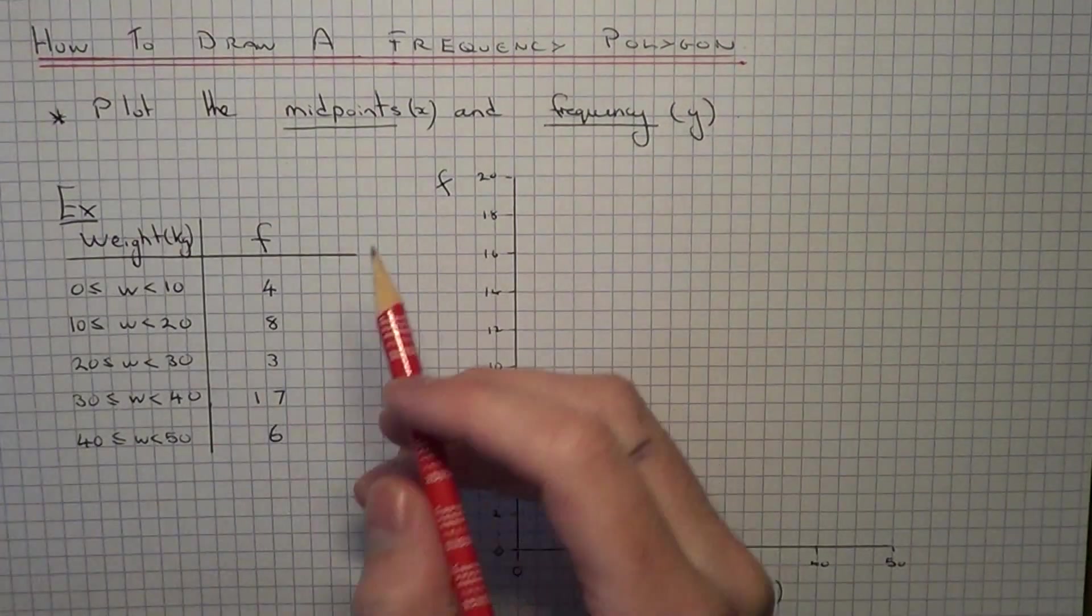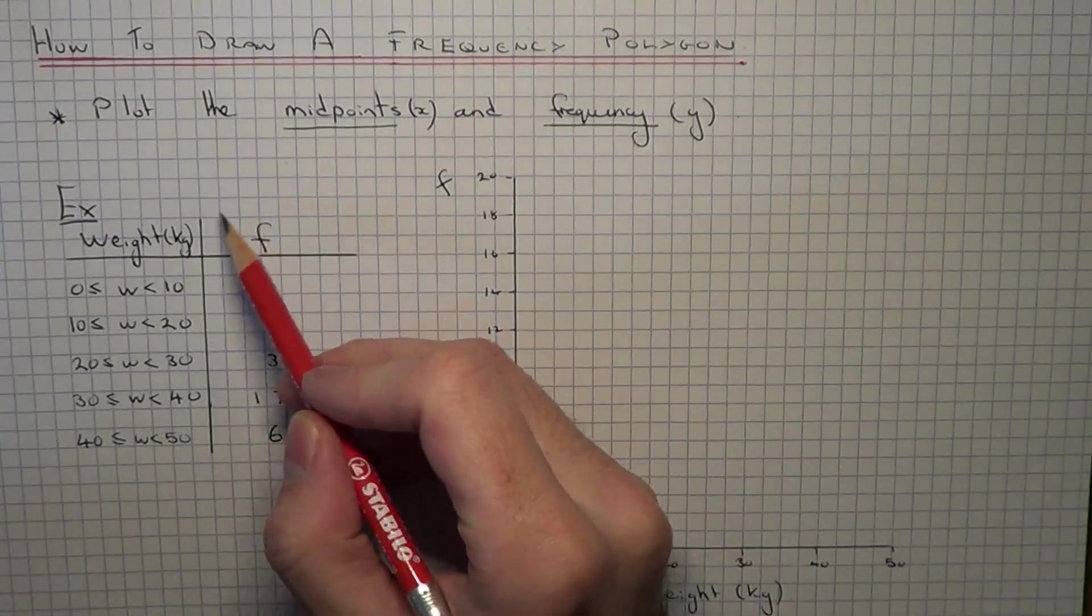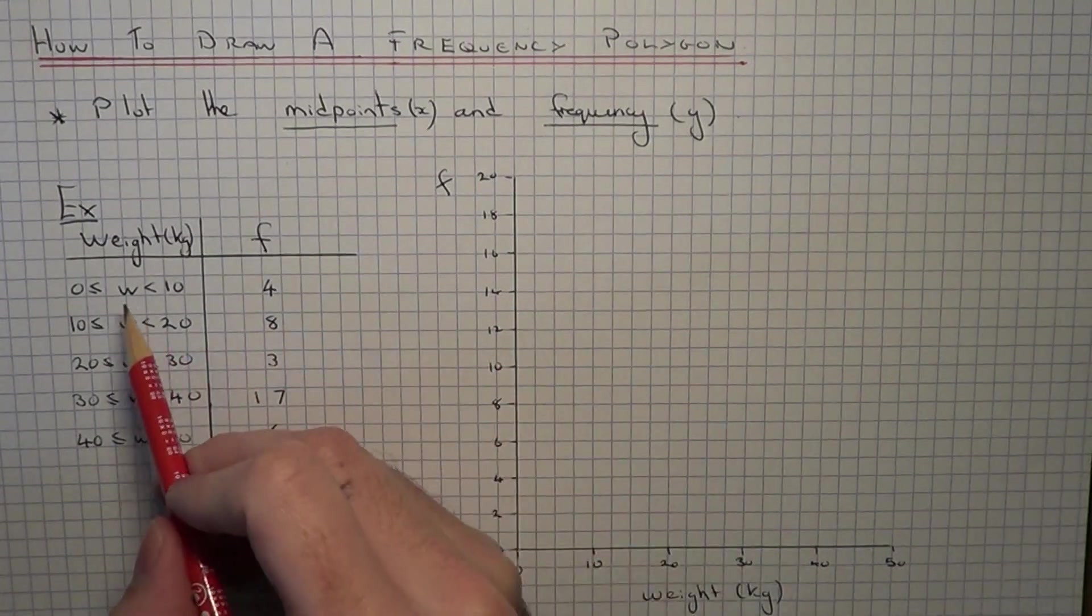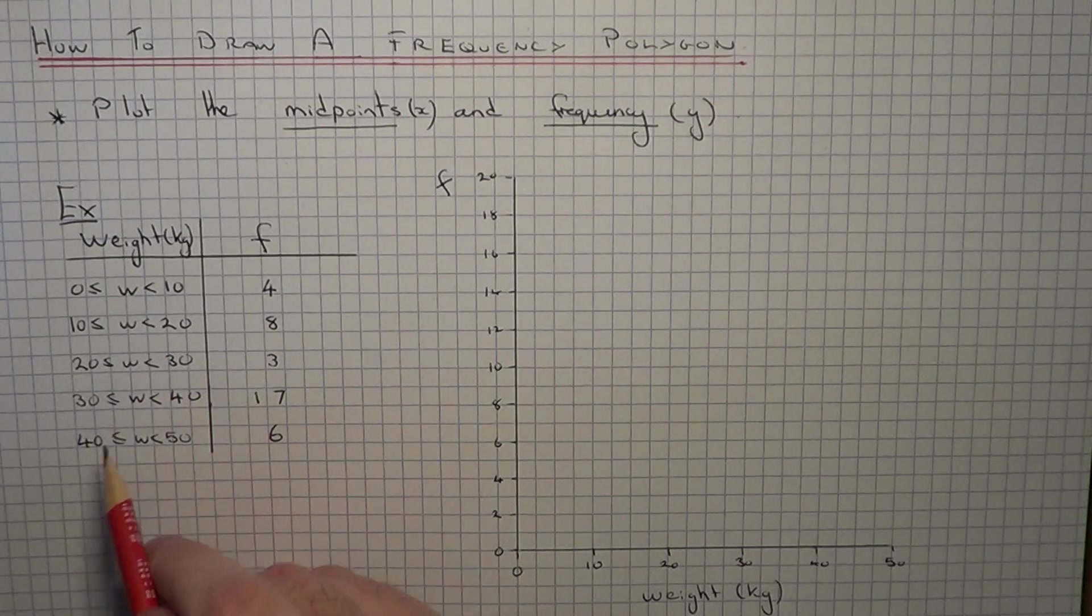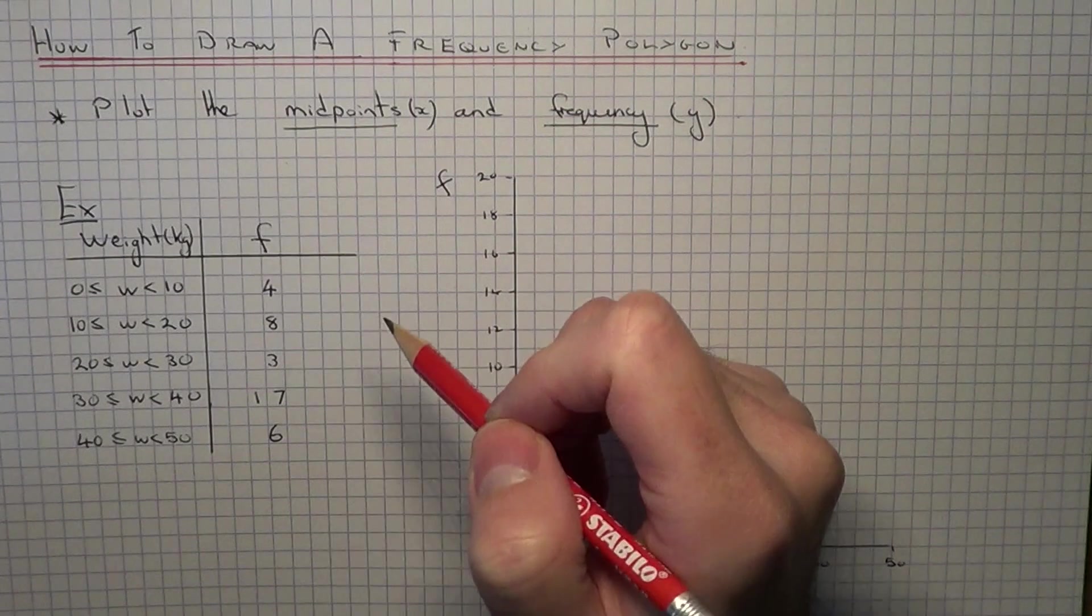So let's have a look at an example of drawing a frequency polygon. This frequency table shows the weights of some people. We have 5 groups: 0-10, 10-20, 20-30, 30-40, 40-50, and in the second column we have the frequency.